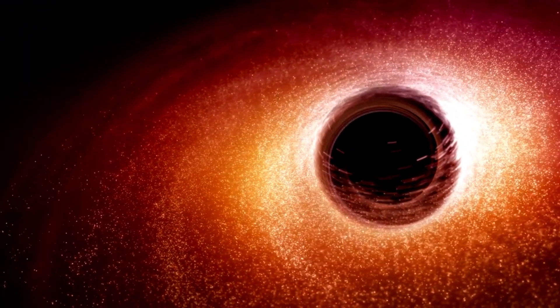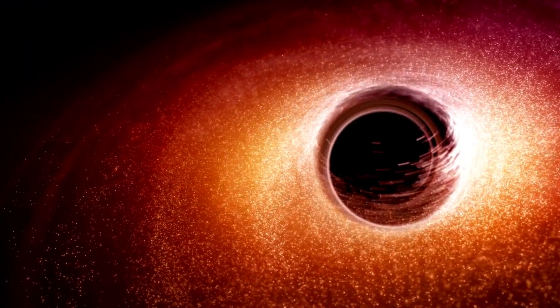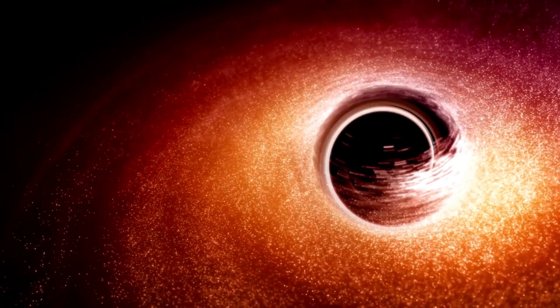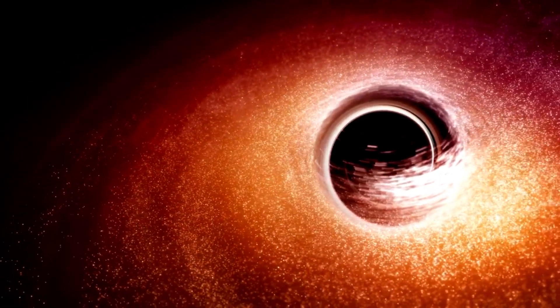Some physicists have proposed a hypothesis that they call the Amps Firewall, or the Black Hole Firewall, which holds that the event horizon is a wall of fire that would instantly consume anything that touched it. Therefore, there is no way out of a black hole, and there is no way anything could ever go within. But this violates Einstein's general theory of relativity.